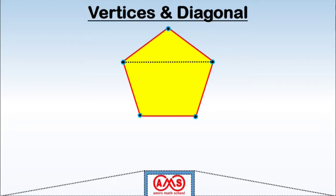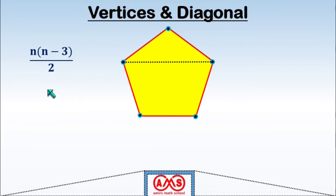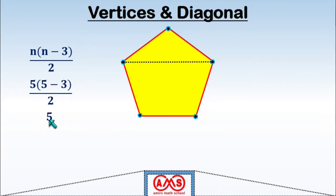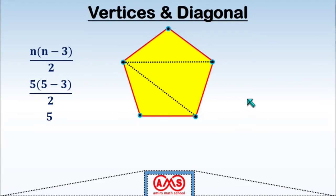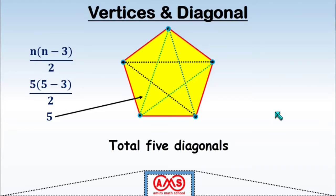We know the formula: for an n-sided polygon, the number of diagonals is n times (n minus 3) divided by 2. In the case of a pentagon, n equals 5, so 5 times (5 minus 3) divided by 2 equals 5. So in a pentagon we can draw 5 diagonals.